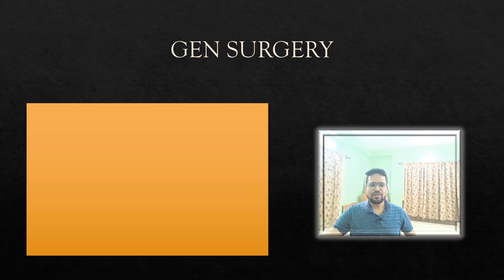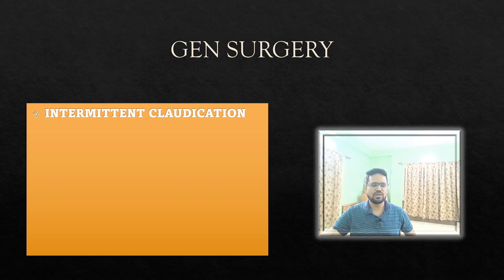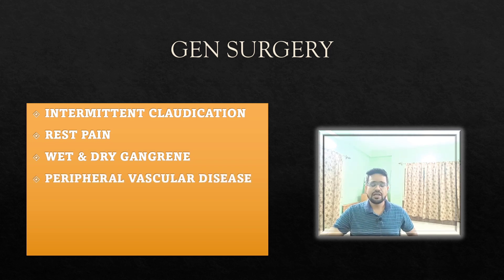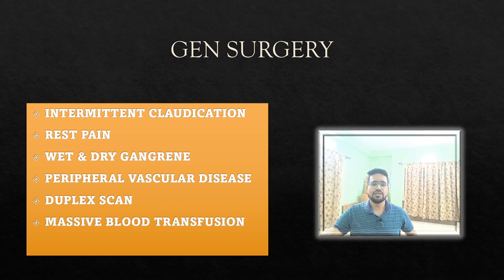Other important general surgery topics include intermittent claudication, rest pain, and peripheral vascular disease. Read all management and classifications thoroughly from a textbook. Know the difference between wet and dry gangrene, duplex scan, and all investigation methods for peripheral vascular disease, as well as its complications. Also read about massive blood transfusion.